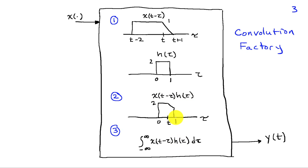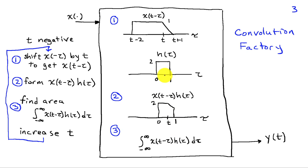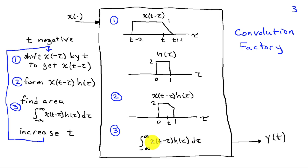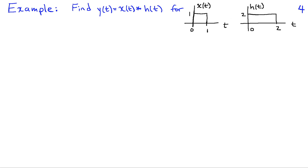In the third step, we'll evaluate the area under that signal or the integral. I'm going to start off for a negative value of t, take x(−τ) and shift it by t to get x(t − τ), form the product, find the area, and then increase t. We'll repeat this process to find y(t) for all values we're interested in. We can think of this as taking x(−τ), putting it on a conveyor belt, and as I increase t, moving it further along to interact with h(τ). Now I'll start with an example where I have two rectangular pulses: x(t) has amplitude 1 and is non-zero from 0 to 1, whereas h(t) has amplitude 2 and is non-zero from 0 to 2.